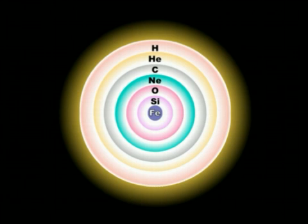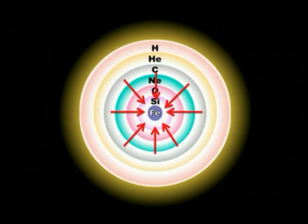For a star weighing 25 solar masses, the iron core forms in only one day. This day is the last day of the star's life. Without fusion reactions taking place in the core, the core contracts very rapidly, that is, in less than a second.